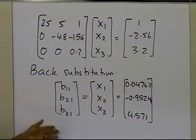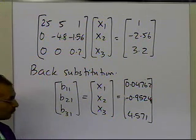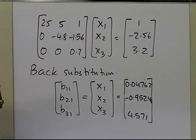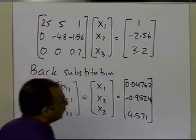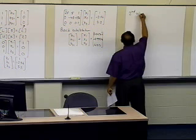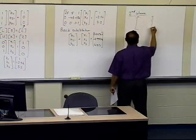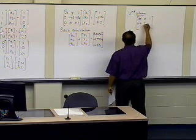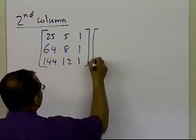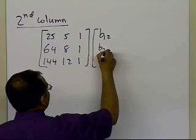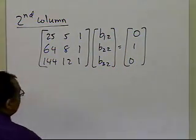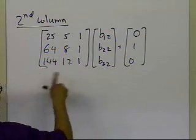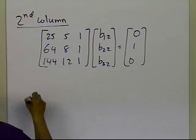That's how you find the first column of the inverse matrix. For the second column, solve A times [B12, B22, B32] = [0, 1, 0] — the second column of the identity matrix — using LU decomposition with forward and back substitution to find the unknown vector.